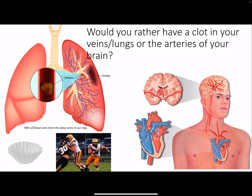The lungs act as a filter — they catch clots coming from the deep veins of the legs so they don't get pumped out through the left ventricle to the rest of the body. But if you have an ASD, a clot might go through it and get pumped to the brain anyway. This is more commonly associated with ASD than VSD.